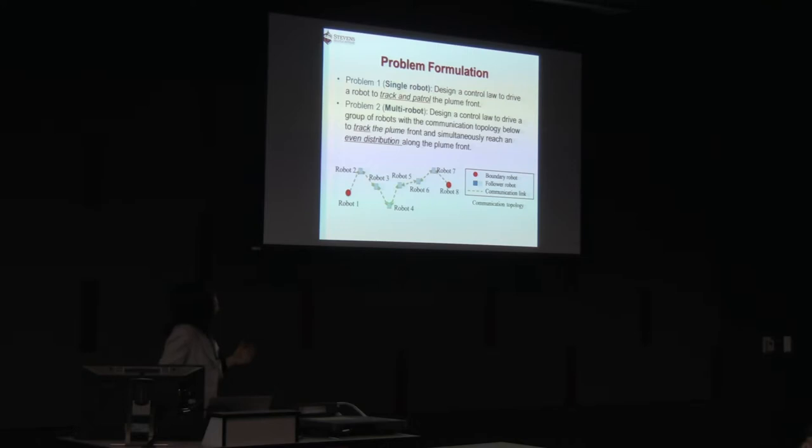So the problem for single robot tracking is to design control of the robot to track and patrol the plume front, so it catches the plume front and moves along the tangent direction of the plume. For multi-robot, not only tracking, we want multiple robots to evenly distribute along the plume front radius.